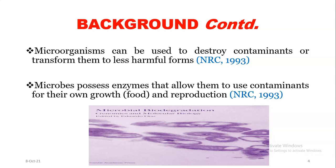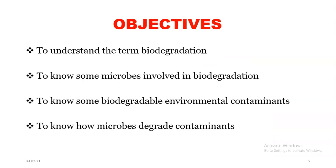Microorganisms can be used to destroy these contaminants or transform them into less harmful forms. These microbes possess enzymes that allow them to use contaminants for their own growth — in the form of food — and also for reproduction. Our objectives are: to understand the term biodegradation, to know some microbes involved in this process, to know some biodegradable environmental contaminants, and to know how microbes degrade contaminants.